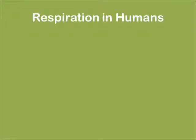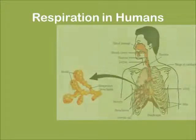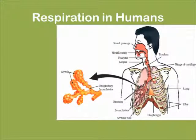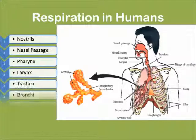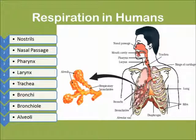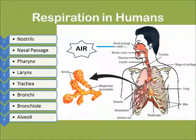Now let us learn the respiration process in humans. This is how the setup looks in a human being, and given to the left of the screen is the procedure in which the air passes through the human. Firstly, the air will enter the nose. Then it passes the nasal passage, then the pharynx, then the larynx and down to the trachea. Then it enters the bronchi, then the bronchioles, and finally enters the alveolus.